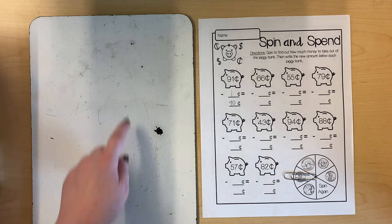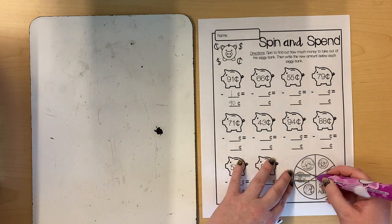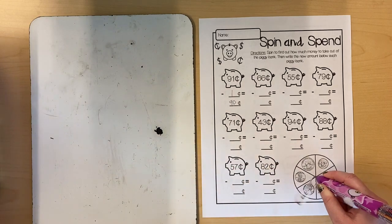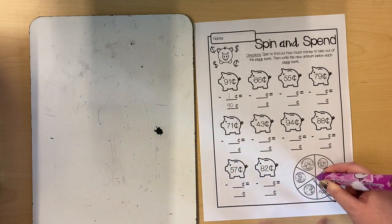If I get a little trickier one, I might want to use my whiteboard to solve a problem. Let's try one more. 66 cents and I'm gonna take out, oh, I'm on the line. Let's spin again.